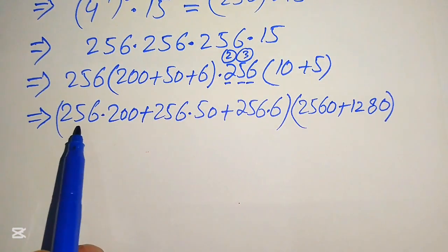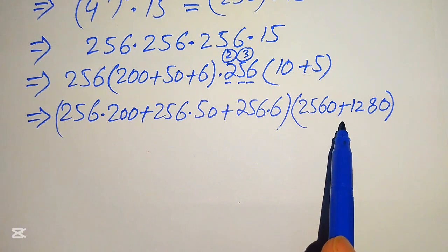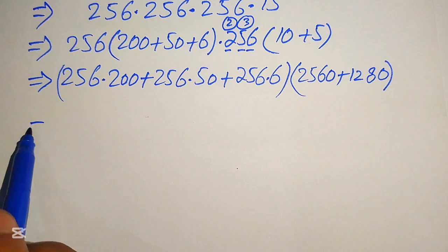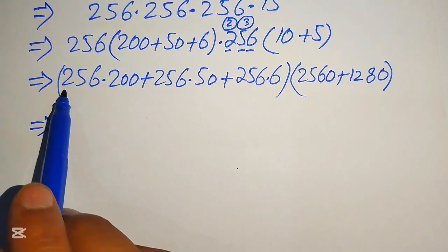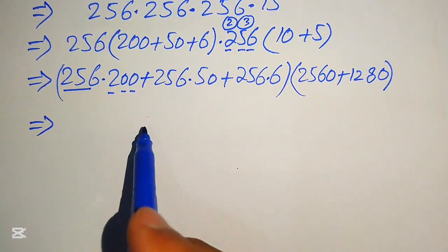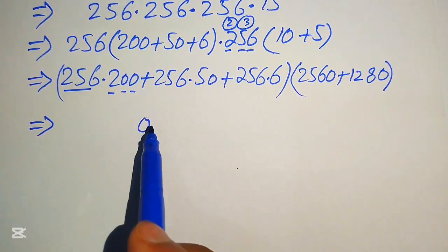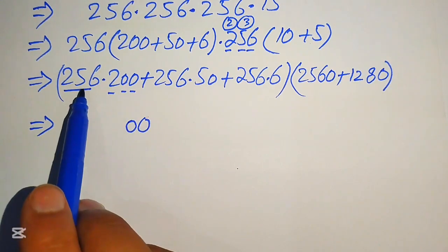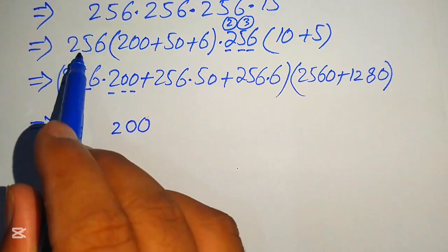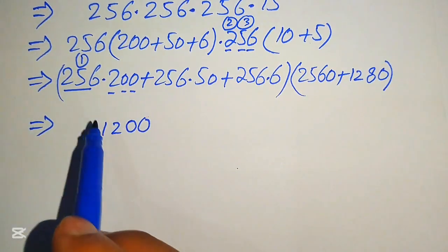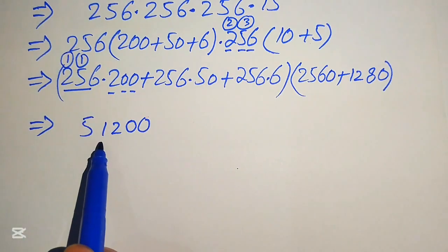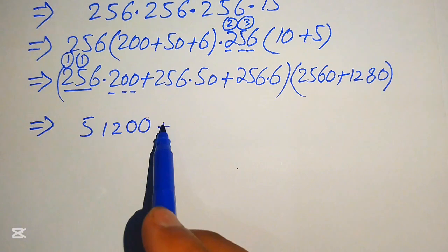We add these results to get 256 times 15. Then for 256 times 200, we consider 2 as one digit: 2 times 6 is 12, write 2 carry 1; 2 times 5 is 10, plus 1 is 11, write 1 carry 1; 2 times 2 is 4, plus 1 is 5. With two trailing zeros, this gives 51,200.